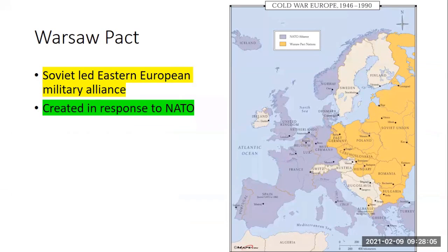The Soviet Union responds, and the satellite states of Eastern Europe meet in Warsaw, Poland, and they form a military alliance known as the Warsaw Pact. It's called the Warsaw Pact because Warsaw is in Poland, a communist state supported by the Soviet Union. This is a military alliance created in response to NATO. So if there were to be a World War III, it would be between NATO and the Warsaw Pact. Europe is going to be heavily militarized during the Cold War, with lots of American military bases built up in Western Europe — Italy, Germany — in case of a Soviet attack.